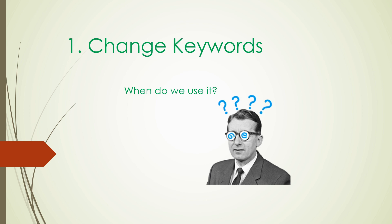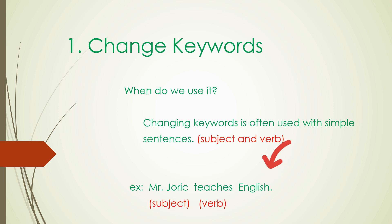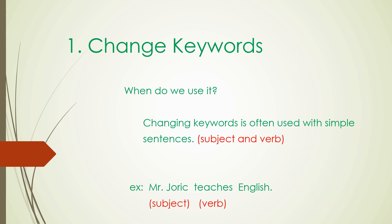When do we use paraphrasing style number one? Changing keywords is often used with simple sentences, especially in writing. Read the example below: Mr. Jorick teaches English. This is an example of a simple sentence because it only has one subject, Mr. Jorick, and one verb, which is 'teaches.' Got it? Very good! So, let's proceed to our next paraphrasing style.